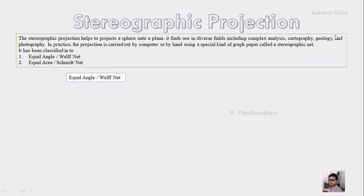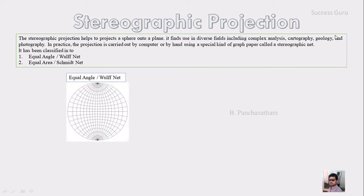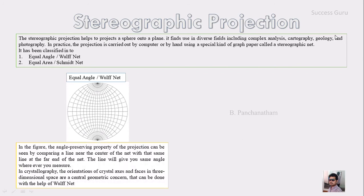The equal angle net will look like this and it preserves the angle property — that is, if you trace a line from top to bottom, wherever you measure, the line will give you the same angle throughout. That is the angle-preserving property. In general, in crystallography the orientation of the crystal as well as the angle between the faces are of main importance, so crystallographic goals generally use the equal angle net, that is the Wolf net.